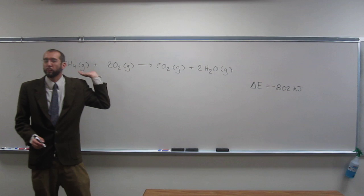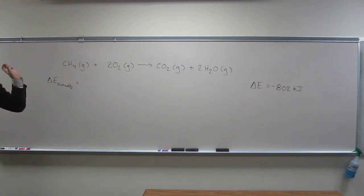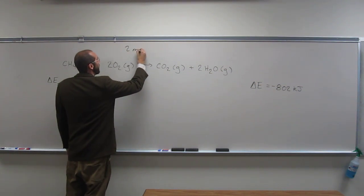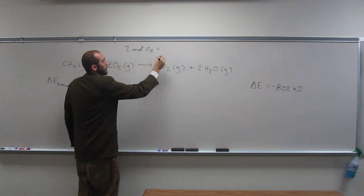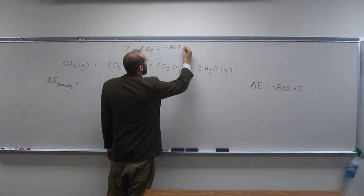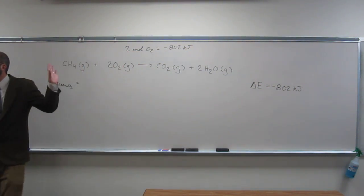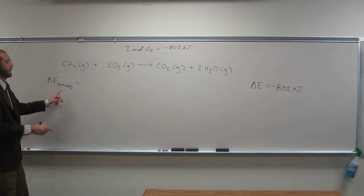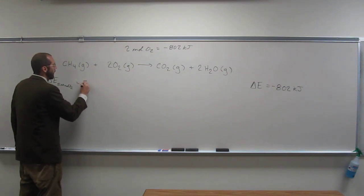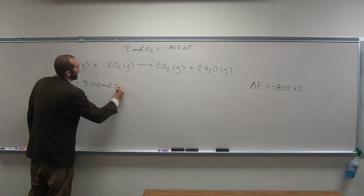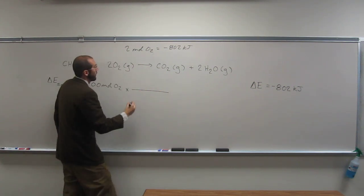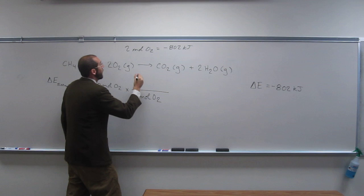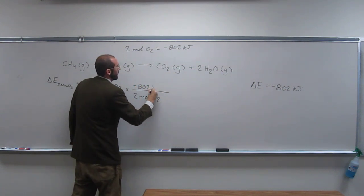Remember, stoichiometric relationships for chemical equations, balanced chemical equations - you guys recall that, right? So in this case, we've got a stoichiometric relationship of two moles of oxygen to negative 802 kilojoules of energy. Is everybody okay with that? So that's a conversion factor. So effectively, what we can say is that if we want to know the energy of five moles of oxygen, well, 5.00 moles O₂, moles O₂ on the bottom of course, and negative 802 kilojoules of energy.